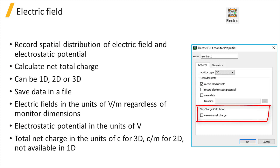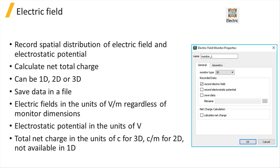Total net charge calculation can also be disabled or enabled. The monitor's location and size can be adjusted under its geometry tab. The electric field distributions returned by the monitor will always have the unit of volts per meter, regardless of whether the monitor is 1D, 2D, or 3D, and the electrostatic potential will be in the unit of volts. The total net charge is reported in the units of coulombs for a 3D monitor and coulombs per meter for a 2D monitor. The total charge result is not available for a 1D monitor.